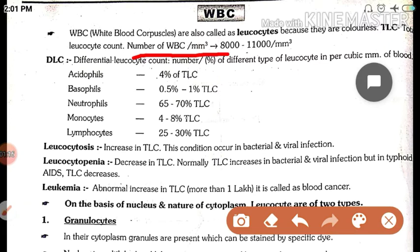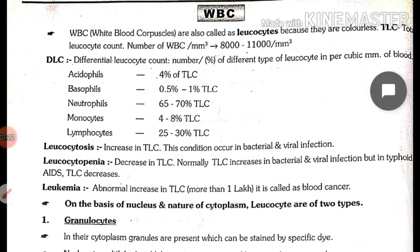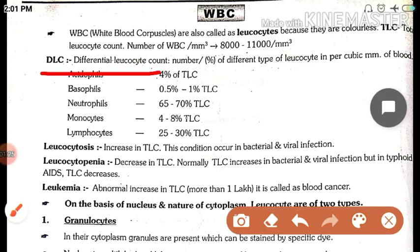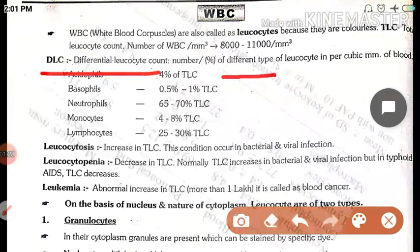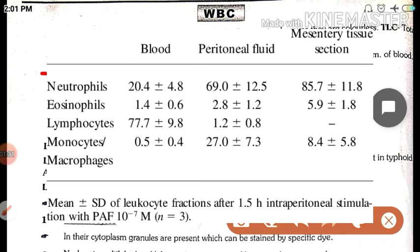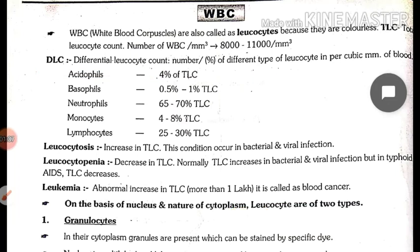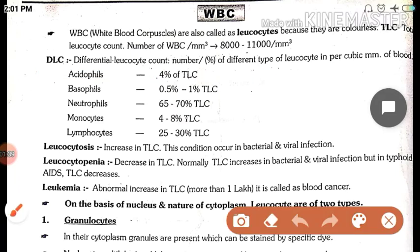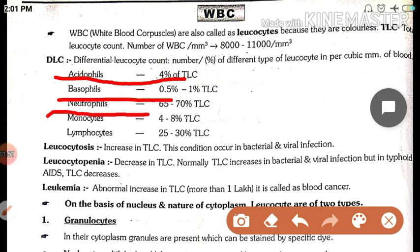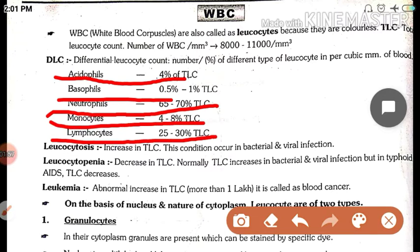Number of WBC: 8,000 to 11,000 per mm cube. DLC ki baat karte hain — DLC means Differential Leukocytes Count, the percentage of different types of leukocytes per mm cube of blood. Acidophils: 4% of TLC; Basophils: 0.5% to 1% of TLC; Neutrophils: 65–70%; Monocytes: 4–10%; Lymphocytes: 25–30%.